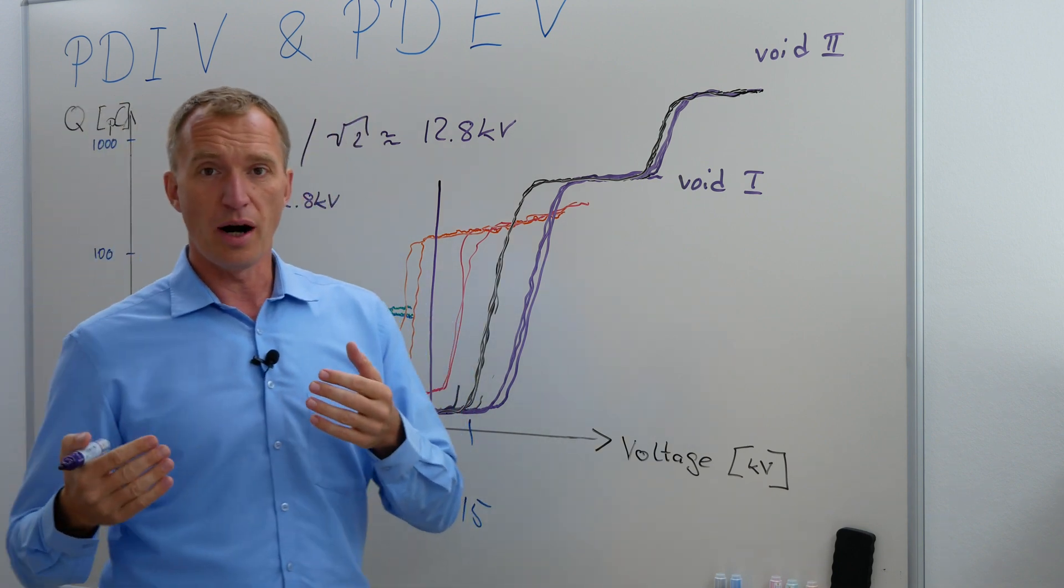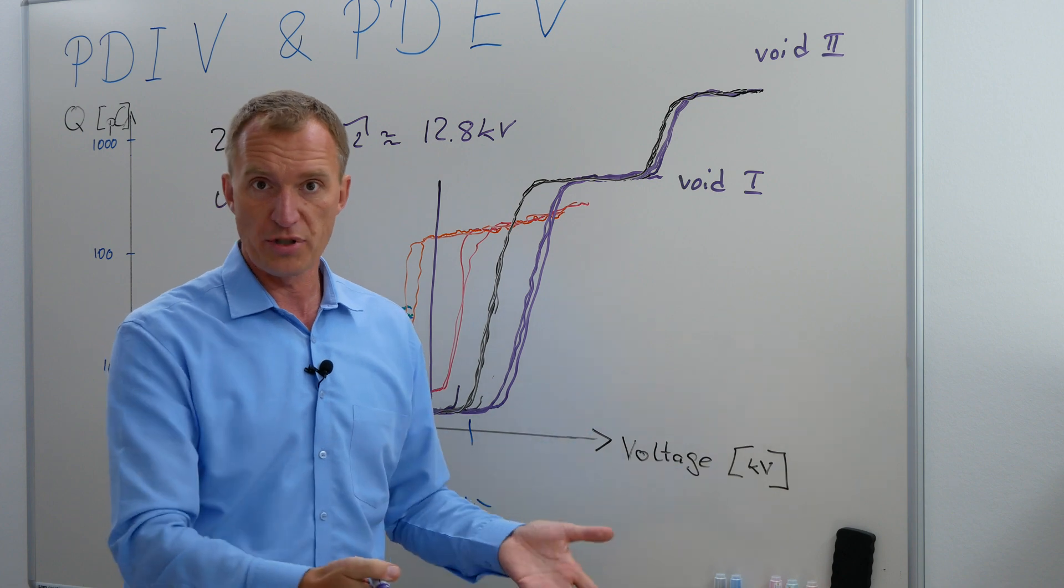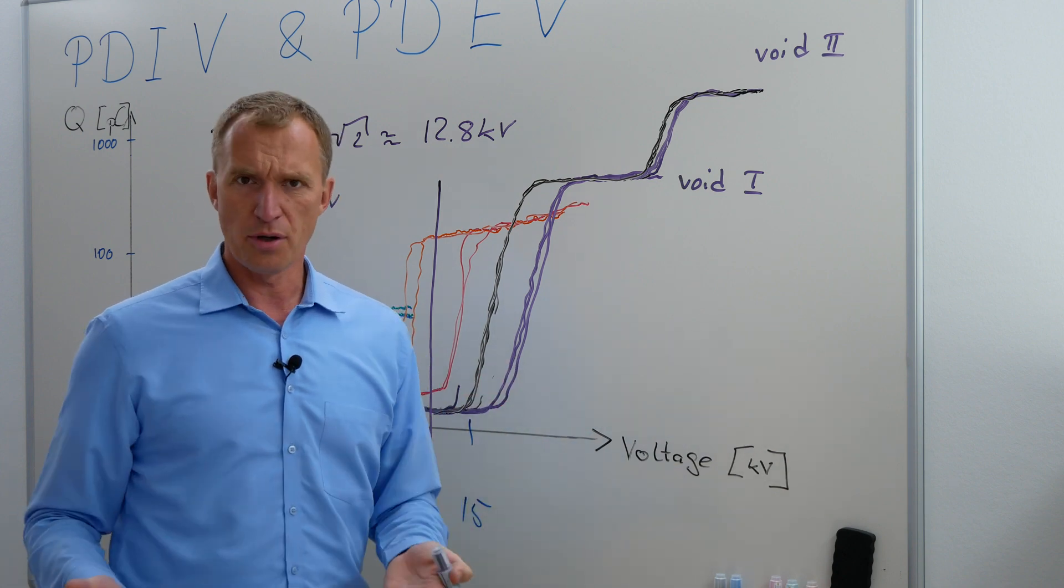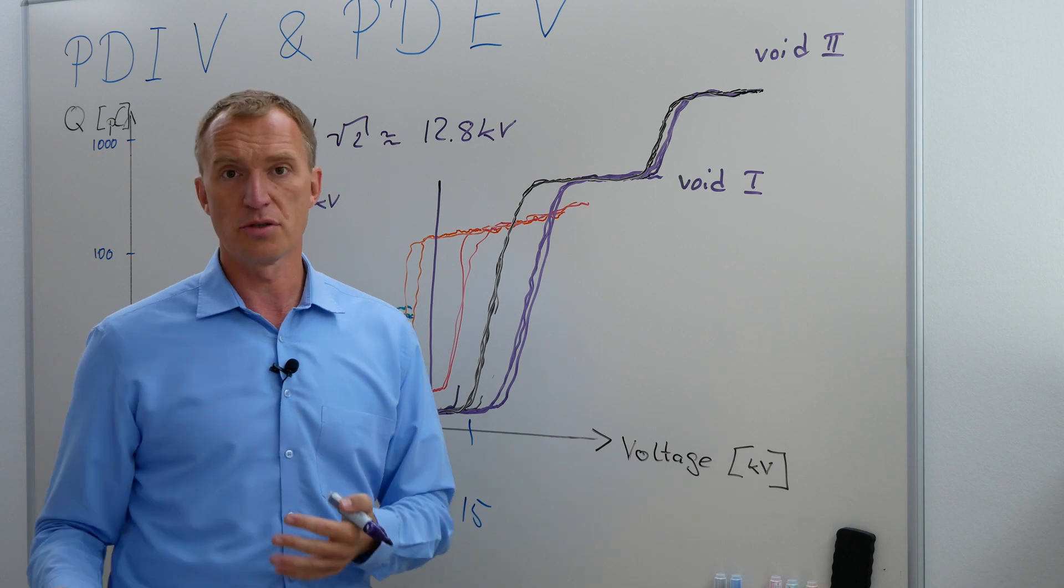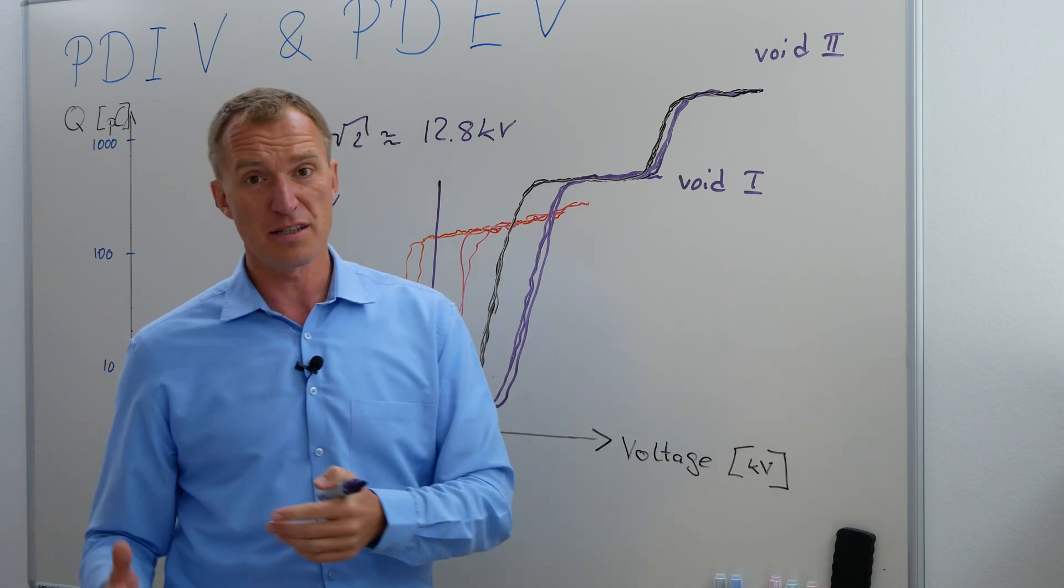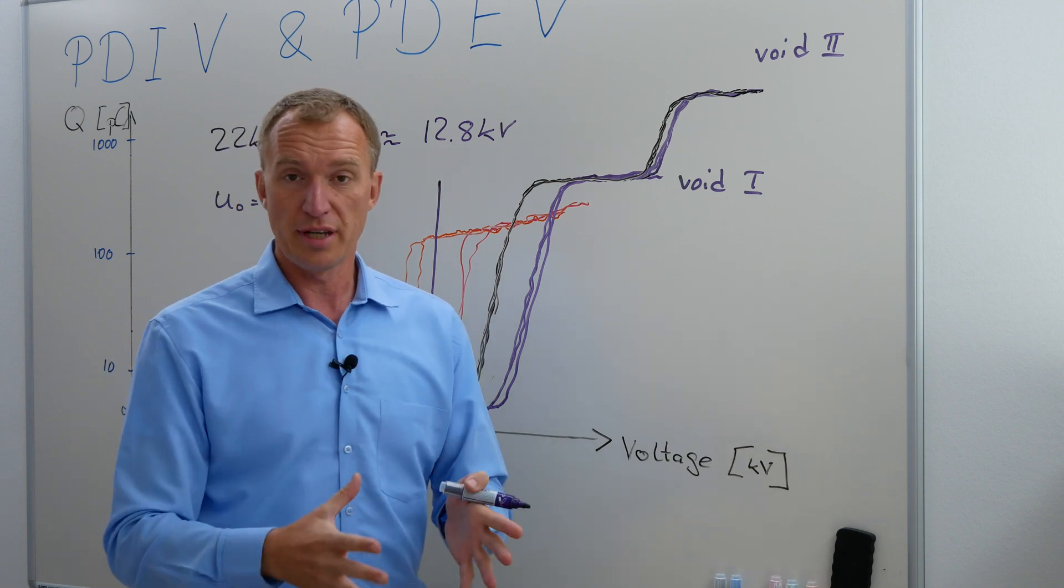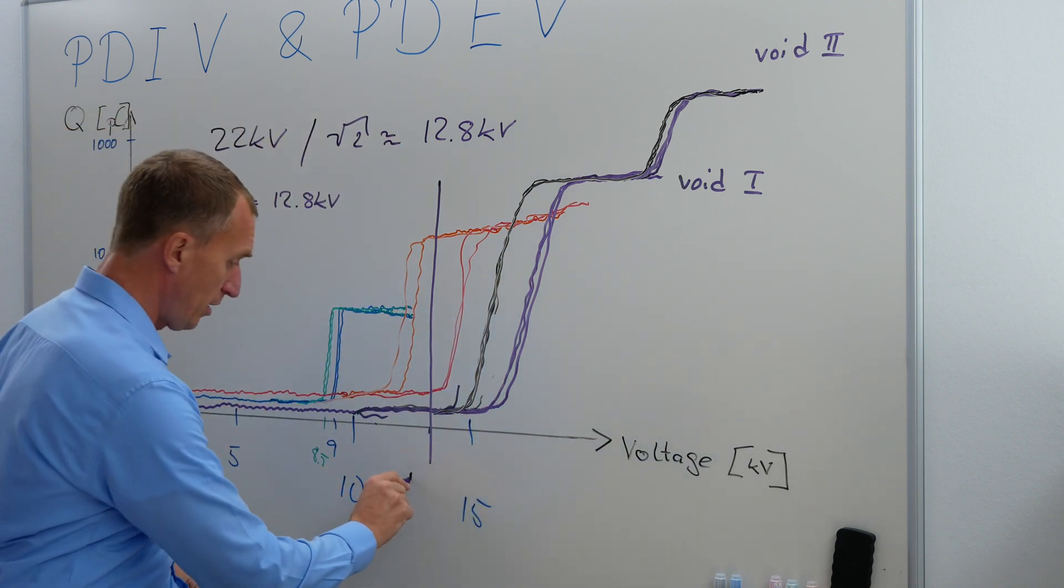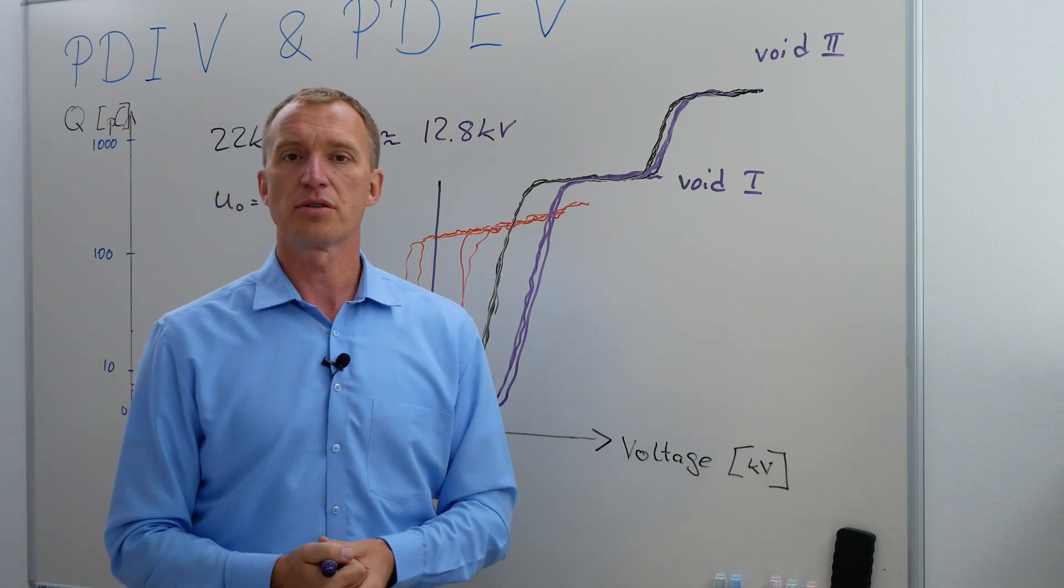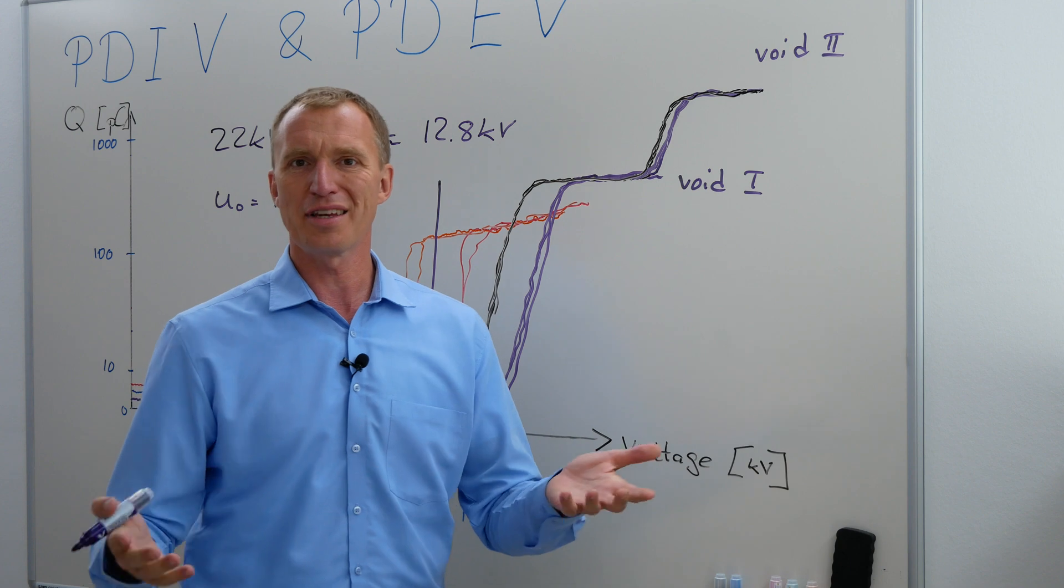So now imagine you are going to the object, to the cable, example given. You're going to go there and you do something like an online measurement, an online partial discharge measurement, which has its good parts and it has its bad parts and this is one of the bad parts. So you're testing at 12.8 kV because this is where it is running and you're not measuring any partial discharges. So now you could say hey this cable is good.